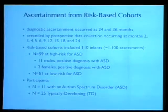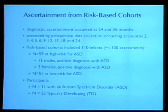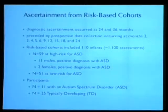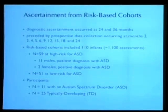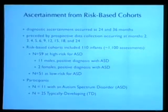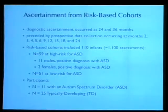Fifty-nine children were at high risk for autism, meaning they were siblings, and of those, 13 developed autism. I'm not going to be talking about the girls because we had only two. I'm going to only talk about the boys here today. There are 51 babies who are at low risk — those are children ascertained later as typically developing — so we end up having 11 who develop autism and 25 who are typically developing.